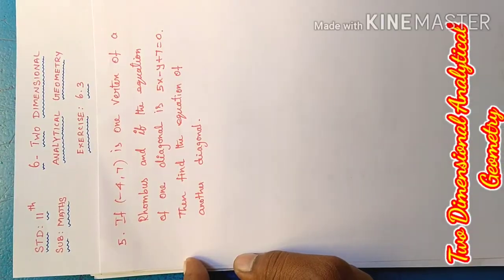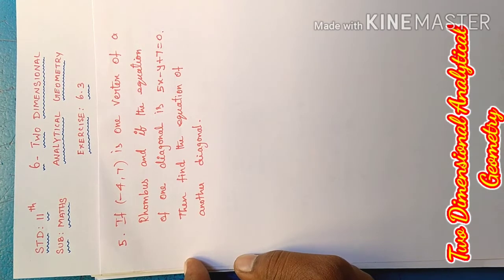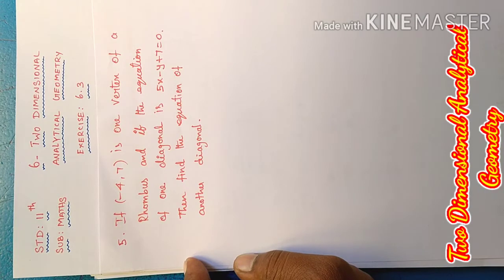Good morning students. Today our 11th standard chapter name is 6, topic name Two Dimensional Analytical Geometry, exercise 6.3. This sum: if (-4, 7) is one vertex of a rhombus and the equation of one diagonal is 5x - y + 7 = 0, then find the equation of the another diagonal.